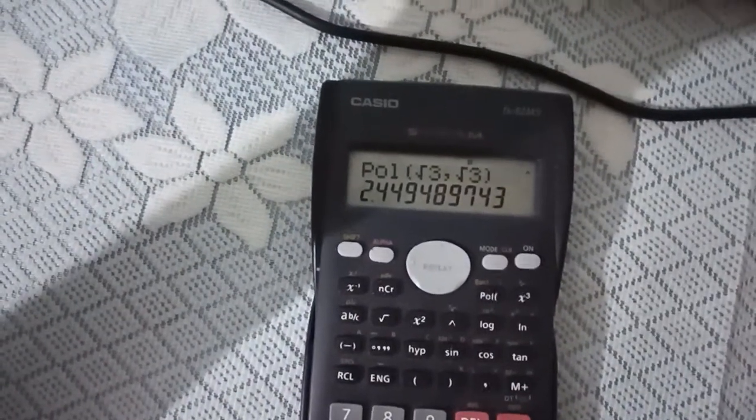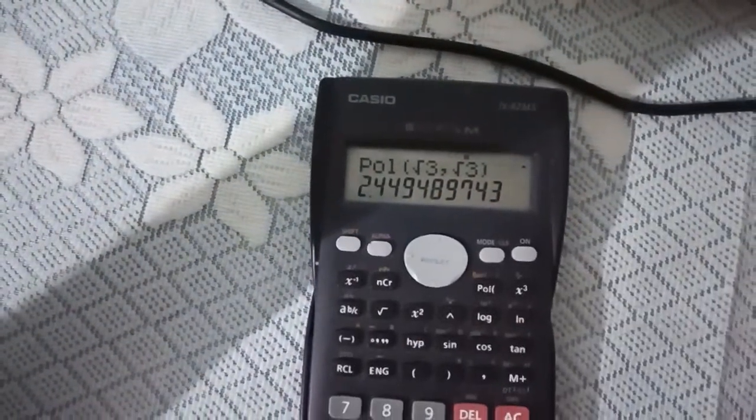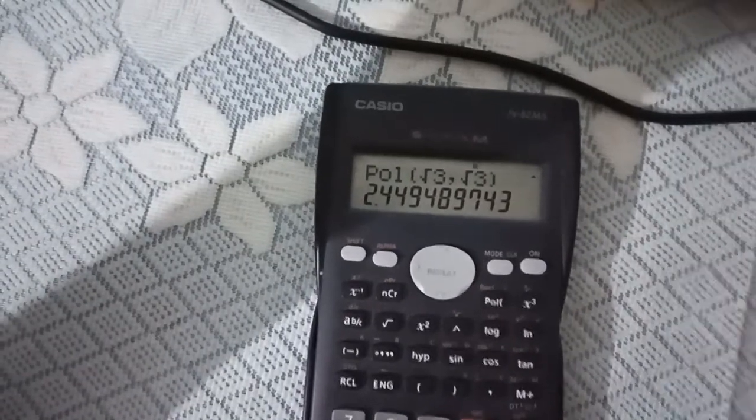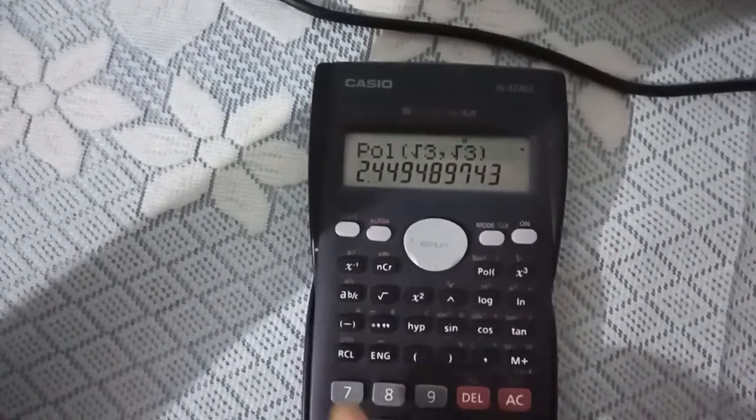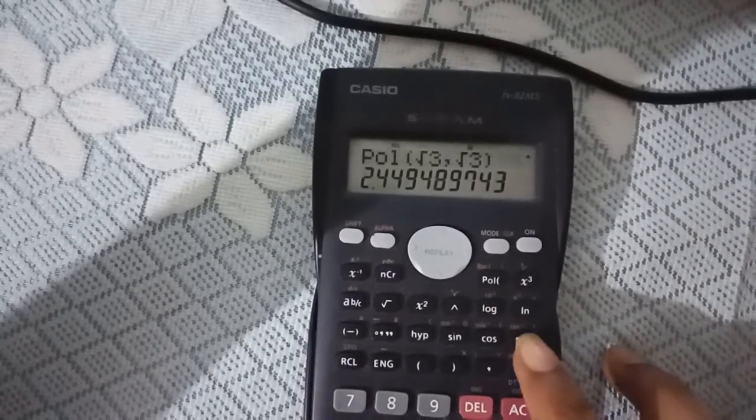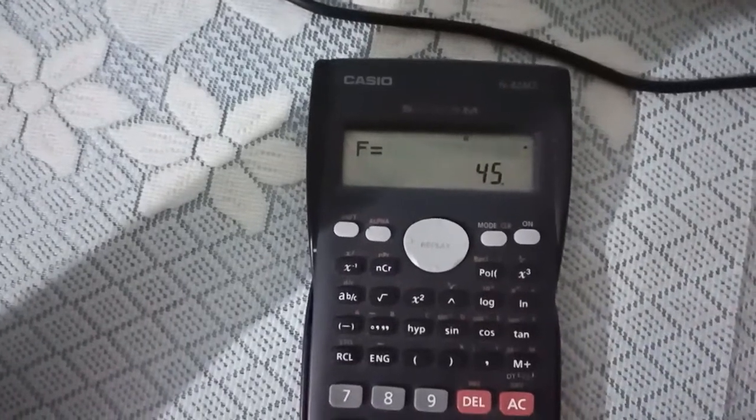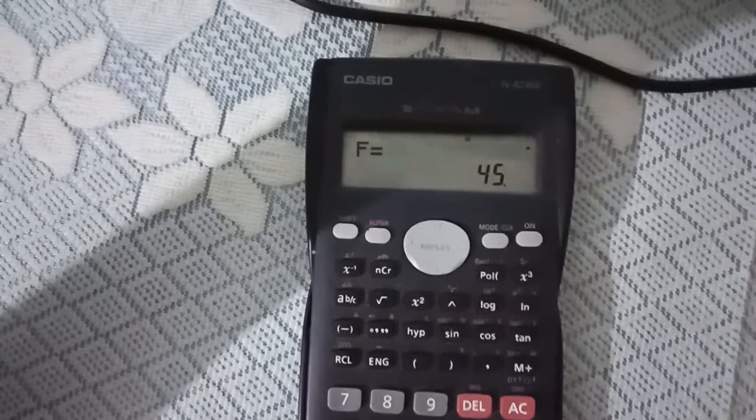We have got the value of R. And how to find the value of theta? For finding the value of theta, you have to press this RCL button. Press this RCL button and then press tan. This will give you the value of theta as 45 degrees.